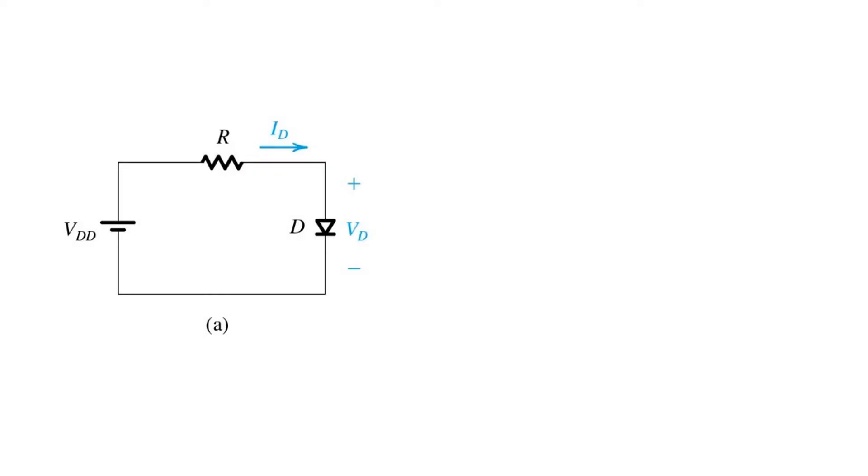We begin with this simple circuit with a forward voltage VDD applied across diode D through a resistor R. We already know techniques for analyzing this circuit. We can use the exponential voltage-current relationship for the diode to solve for the voltage VD and current ID, or we can make an approximation and arrive at an approximate answer much more quickly using the constant forward voltage drop model.